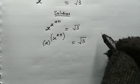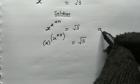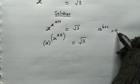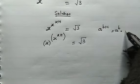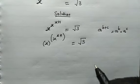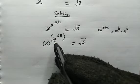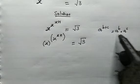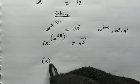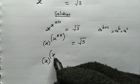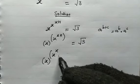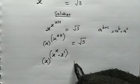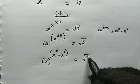Now let's take note of the following: when we have a to the power of b plus c, this equals a to the power of b multiplied by a to the power of c. So from here, we have x to the power of x plus 1, and we can make use of this property. So we have x, then raised to the power of x raised to the power of x multiplied by x to the power of 1, which equals root 3.